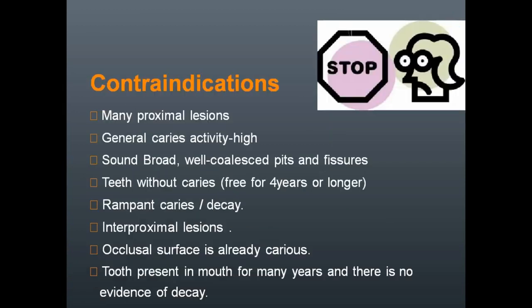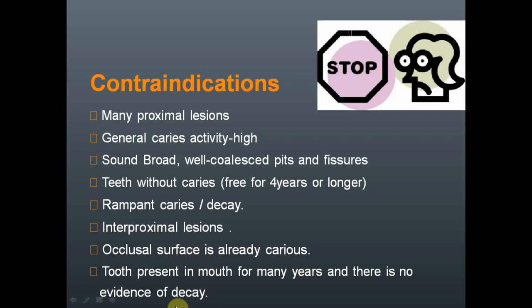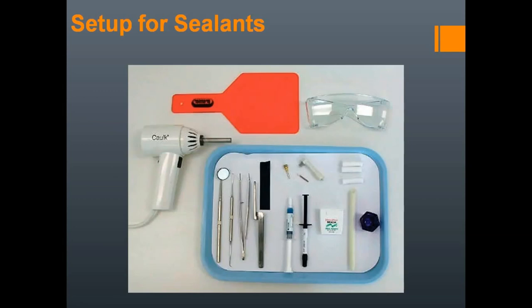Contraindications include high caries activity, proximal lesions, and teeth that have been caries-free for four years or longer. If a tooth has been caries-free for four years in the oral cavity, there is very little chance for caries to develop again, because complete post-eruptive mineralization occurs within two to three years. After that, the risk of caries occurrence is very low. Patients with rampant caries and proximal lesions are also contraindicated for pit and fissure sealants.